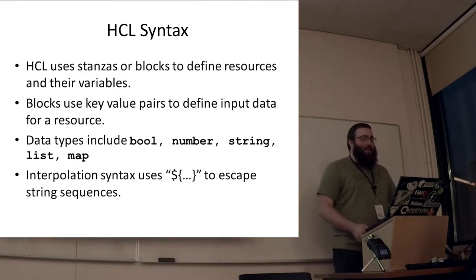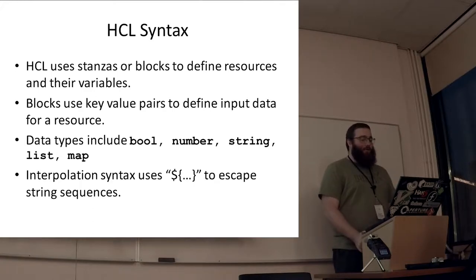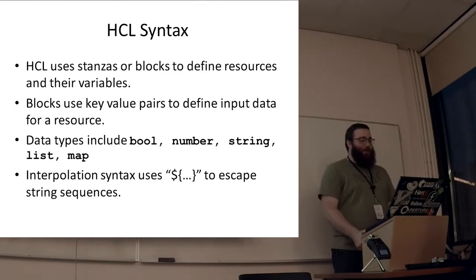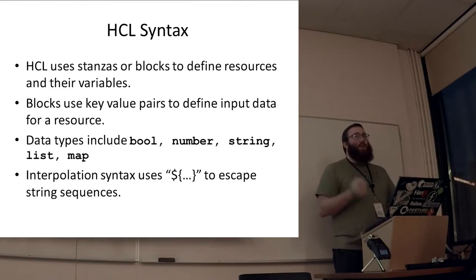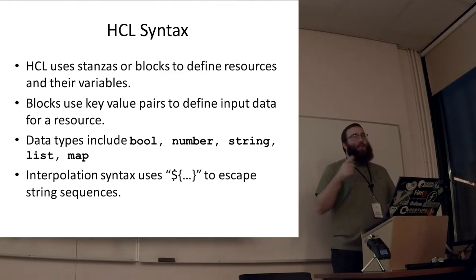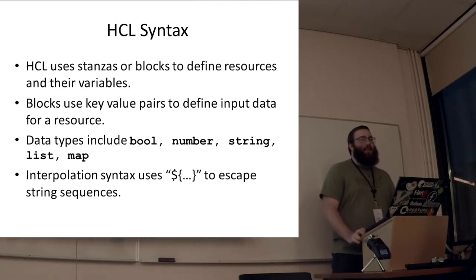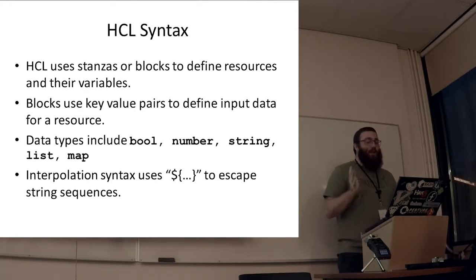HCL is the HashiCorp configuration language, now version 2.0 with Terraform 0.12. The basics of HCL: you've got blocks or stanzas that define resources and their variables. Each resource is an individual code block with individual properties that you define. The majority of what you'll be doing is key-value pairs — you define a resource, it has properties which you input as keys, and each key has a value: server name equals blah, server IP equals blah, and so on. You're basically defining properties of resources; there's no big for loops or complex data structures — it's really just configuration blocks with some logic handling.